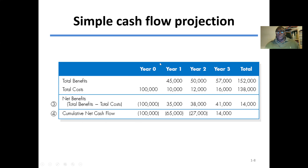Here is a simple cash flow projection example. The project shows total benefits of zero in year zero, 45,000 in year one, 50,000 in year two, and 57,000 in year three, for a total benefit of 152,000. Total costs are 100,000 initially, then 10,000, 12,000, and 16,000, totaling 138,000. The net benefit is 14,000, which is 152,000 minus 138,000 — total benefit minus total cost. If the net benefit is a negative value, then it is not a good idea, meaning the costs outweigh the benefits.